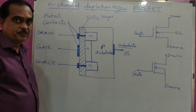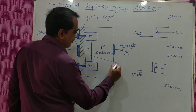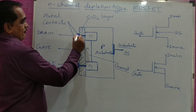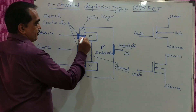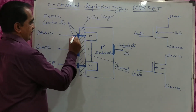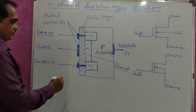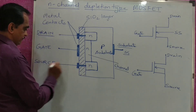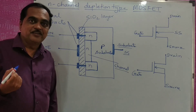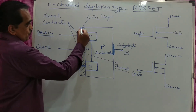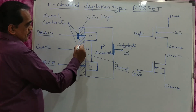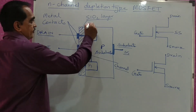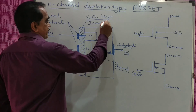This N-type semiconductor in between is called the channel. We will have a metallic contact directly to the semiconductor and name it as drain. Similarly, we will have a metallic contact to the semiconductor and name it as source. So source and drain are directly connected to the semiconductor. The hatched area in between is nothing but a silicon dioxide layer — it is an insulator.